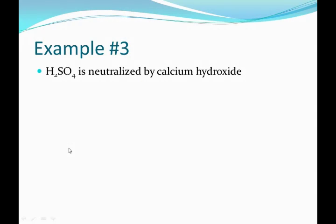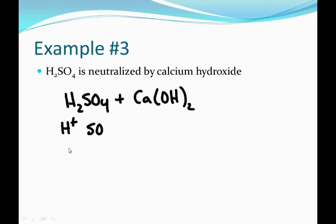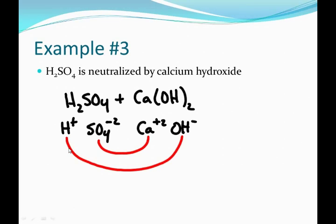Our last example looks at H2SO4 and it's neutralized by calcium hydroxide. We're looking at H+, the sulfate ion, calcium, and the hydroxide ion. And the calcium is going to pair up with the sulfate, and the hydrogen is going to pair up with the hydroxide to make H2O and calcium sulfate.